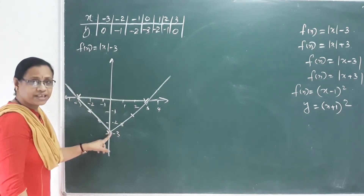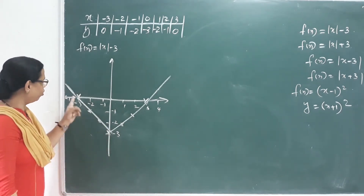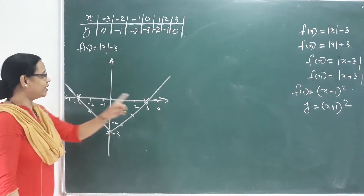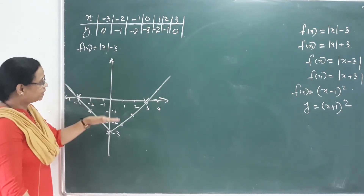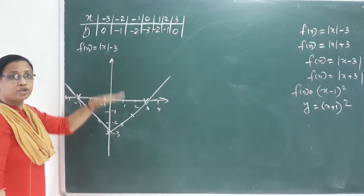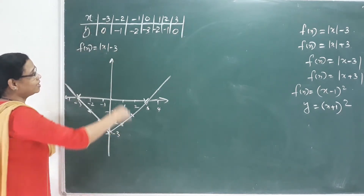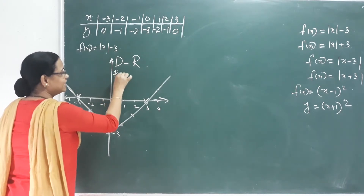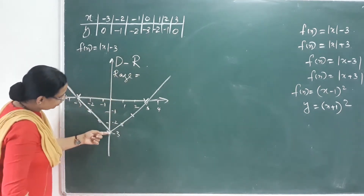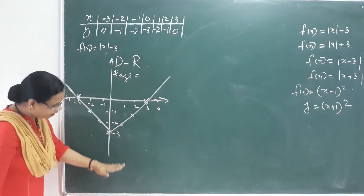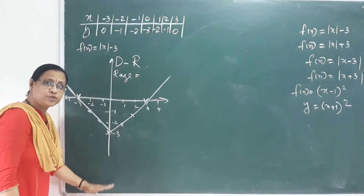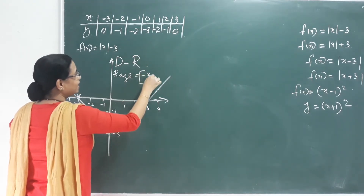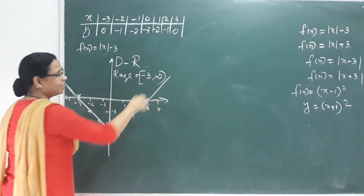Where do we touch the graph? Negative 3. What is negative 3? This axis is zero — this axis is zero, to touch the graph. Domain and range: the domain is all real numbers. If you don't have a y value, negative 3 including, and they go to positive infinity. This is the range.